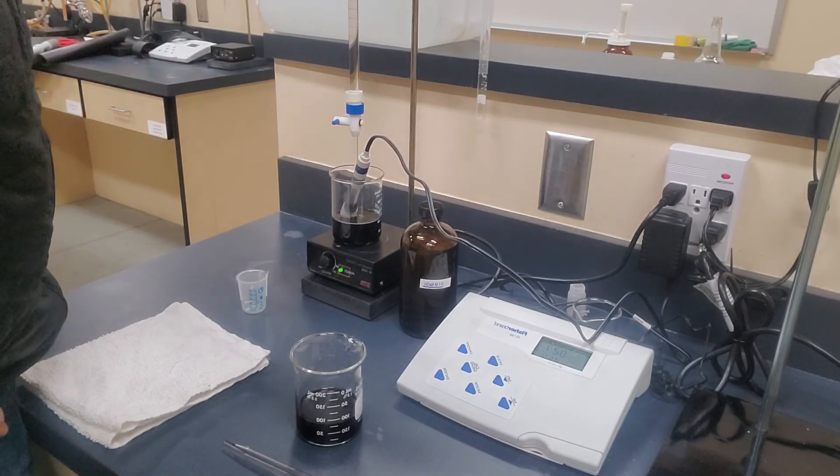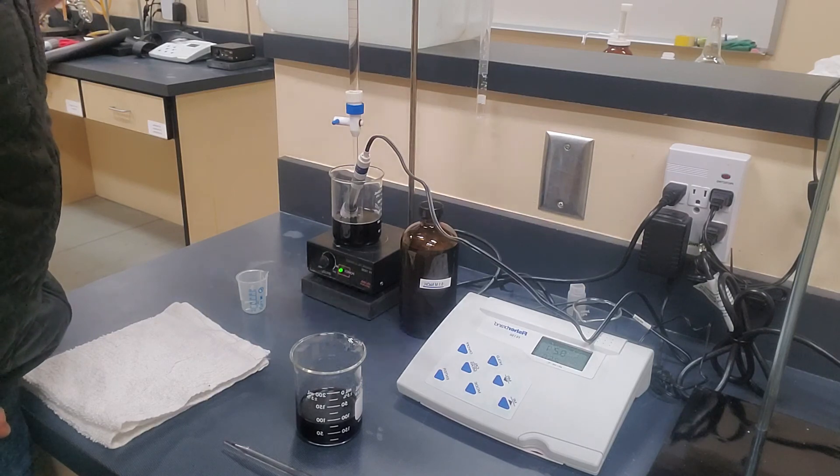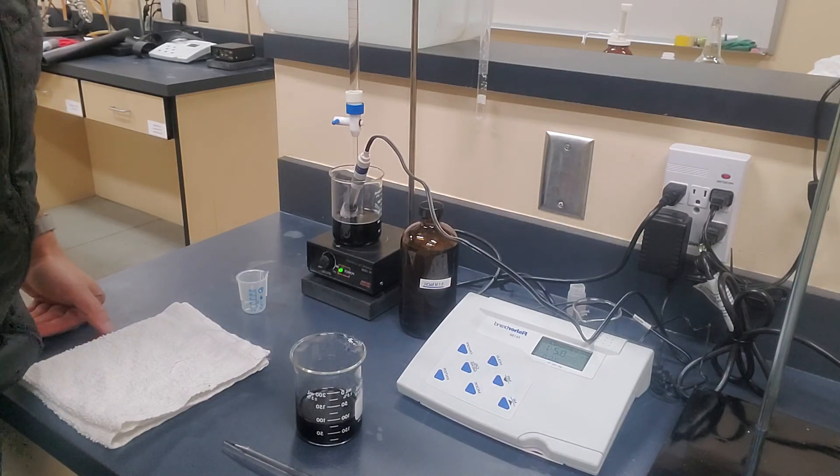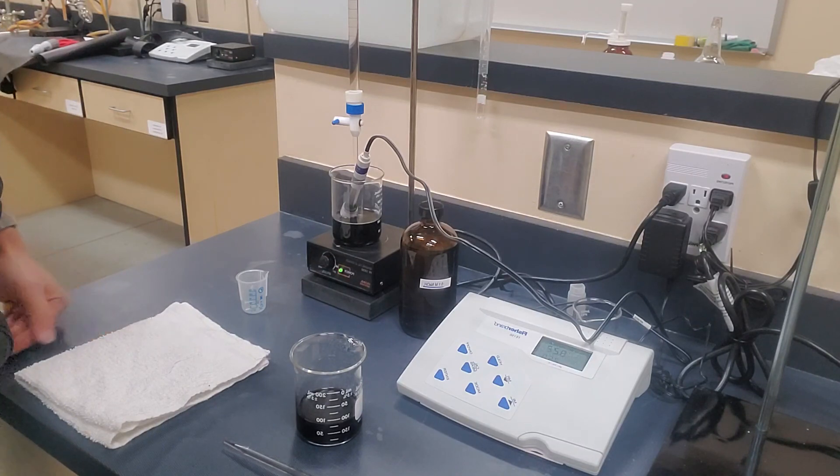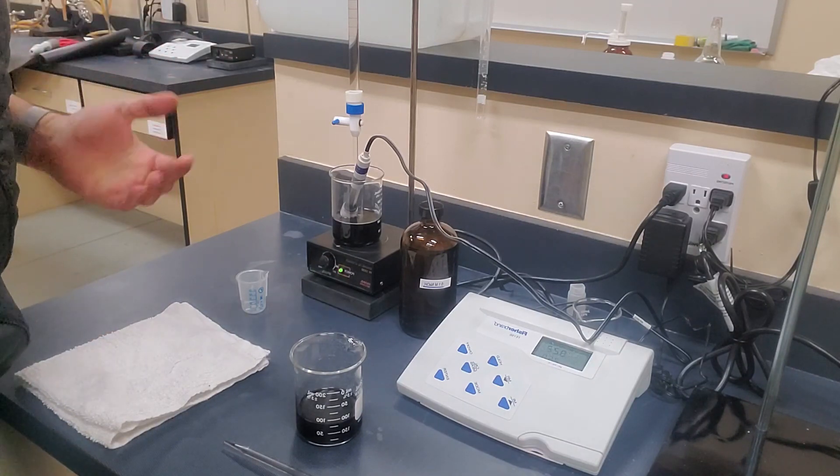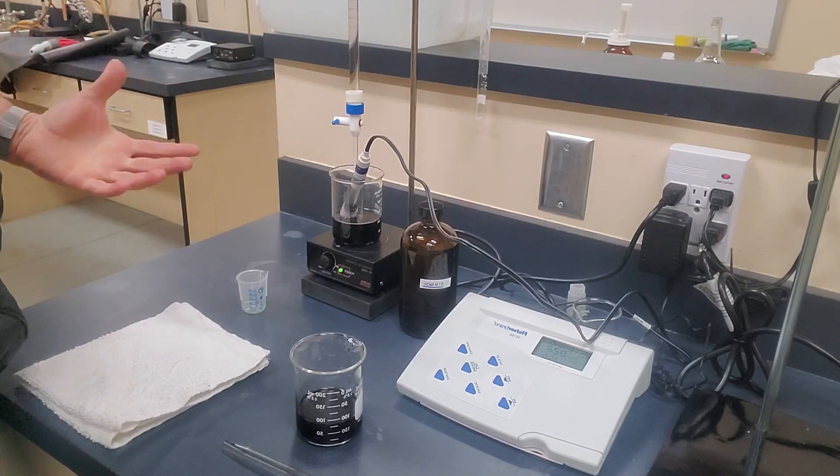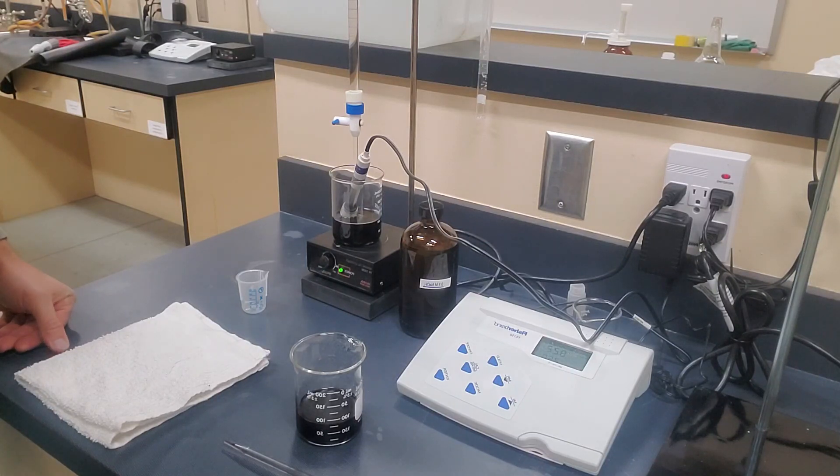We'll take a look on the burette here. Our measurement is 7.1 milliliters of sodium hydroxide. We'd go ahead and multiply that 7.1 times 0.75, and that will give us our answer. So that's how you do a titratable acidity.